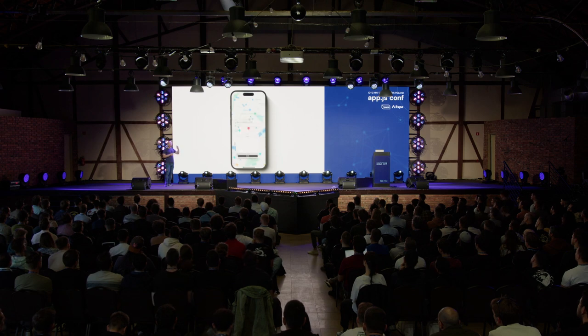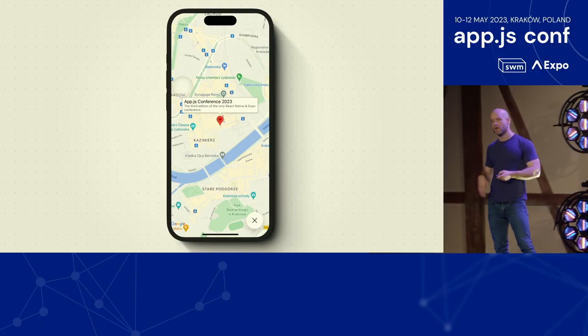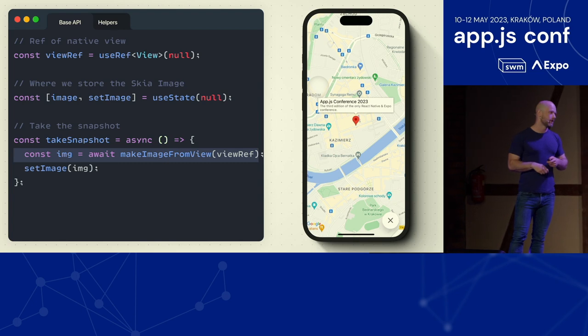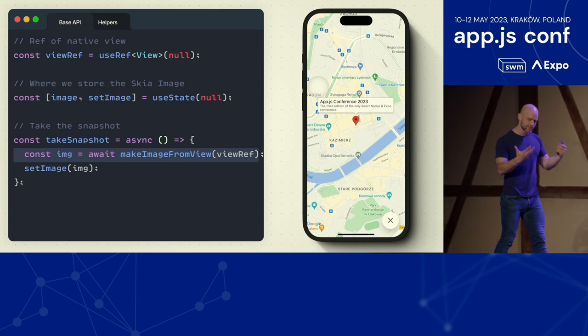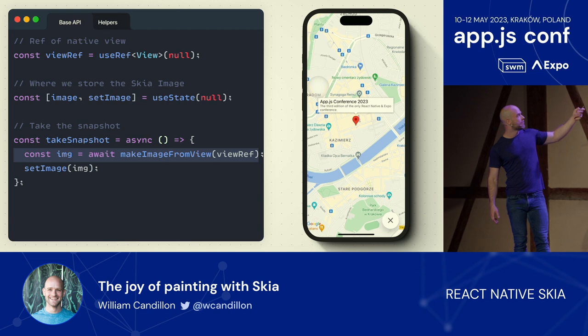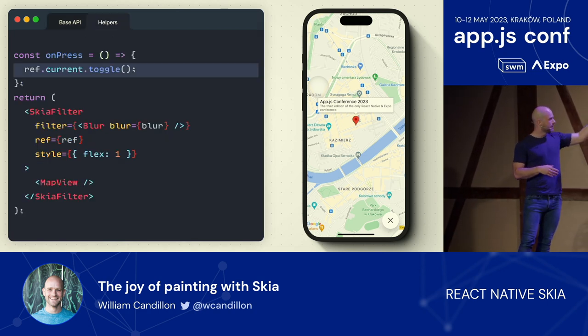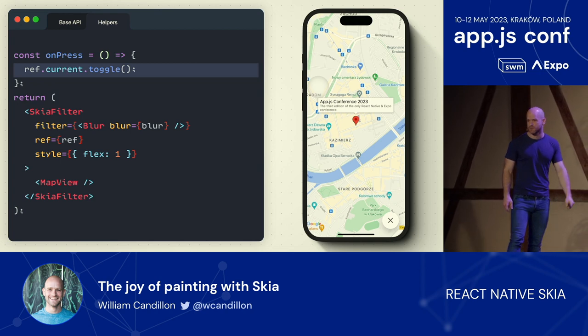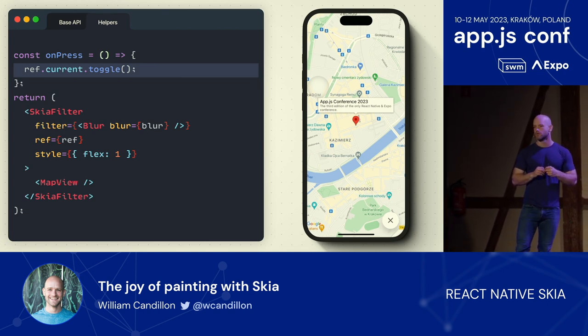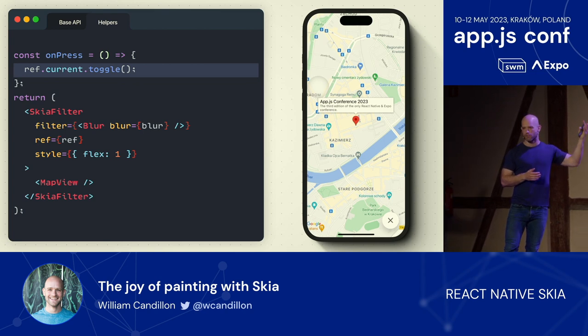The blur view is also slightly animated with a scale value, so thanks to the new Reanimated integration you can animate native views and Skia views using the same code. We provide a new API for snapshot views. It's based on a similar technique used by React Native view snapshot, but a bit faster because we don't do image encoding — we just take the bitmap and upload it to the GPU. To build this demo, I wrote a component called Skia Filter, where you can pass a native view as children and pass the Skia filter as a property.